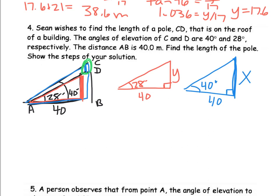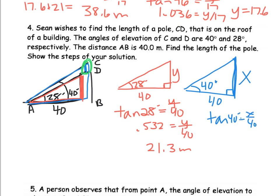So in my red triangle I have tangent 28 degrees equals y over 40, 0.532 equals y over 40, multiply by 40 on both sides. Blue one tangent 40 degrees equals x over 40, 0.839 equals x over 40. So x equals 33.6 meters. And we're going to subtract. And that gives us 12.3.